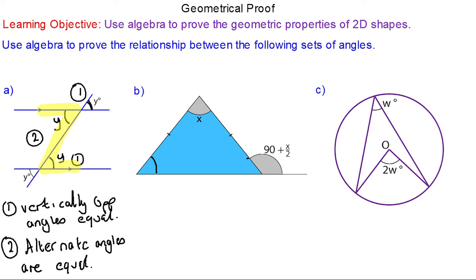For question b we've got an isosceles triangle so each angle will be equal to each other and it would be the difference between 180 and x divided by 2 because they're both equal. So now we've got angles on a straight line of 180 minus x over 2 plus 90 plus x over 2 which is the gray angle and they add up to 180.